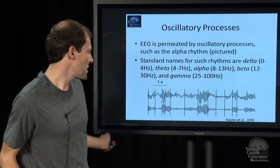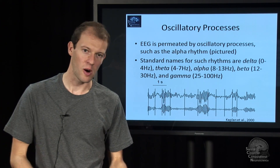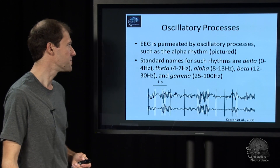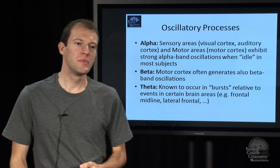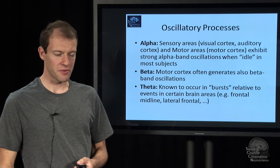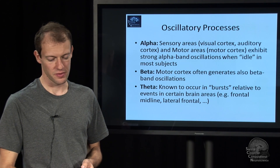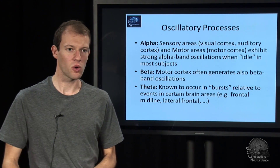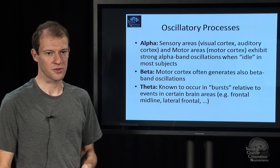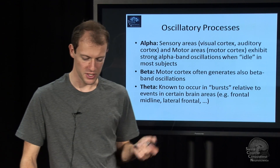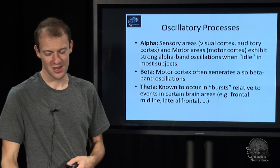These oscillations are pretty strong in raw EEG because of the power of synchrony. We also know something about where these tend to be present: for example, the alpha rhythm is strong in occipital cortex, and there are certain theta bursts in certain other areas. There are about as many specific cases as there are papers on these processes.